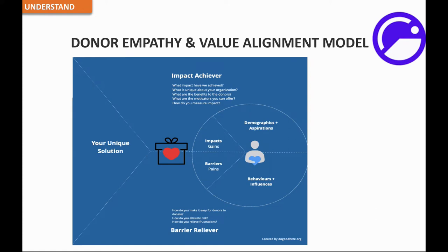How do you relieve frustrations from the donors? These are things you want to tell donors in your narrative so that they feel they can achieve their impact and avoid some of the barriers. This value proposition graphic is what we use to help you find what we call the 'gift zone' — when the donor's values align with yours, they will want to give to you and support you. Answering those questions is very important.